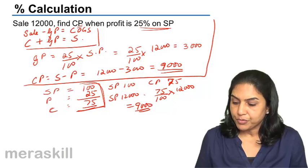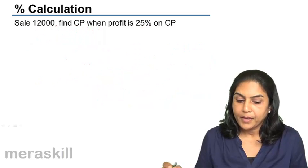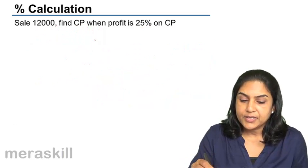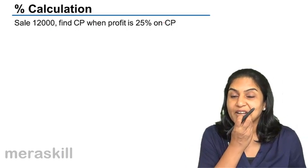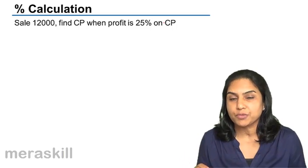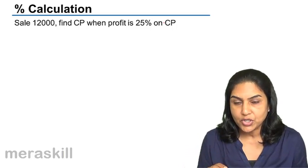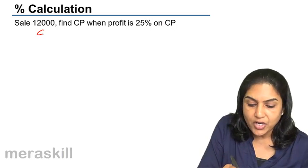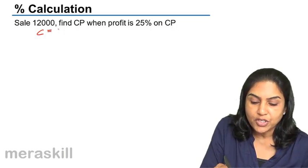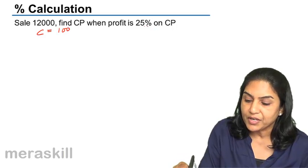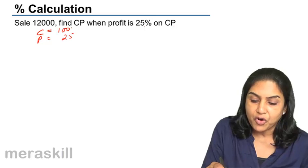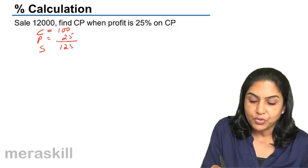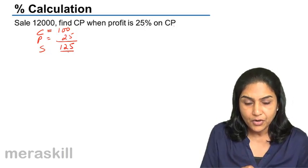Let us look at another computation. Sales is 12,000 and we find cost price when profit is 25% on cost price. Since this is 25% on cost price, cost price equals 100. Therefore profit is 25, and if cost is 100 and profit is 25, sales must equal 125.